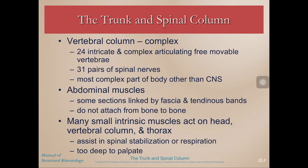Your vertebral column is made up of 24 intricate and complex articulating freely movable vertebrae. We have 31 pairs of spinal nerves as well, but we don't need to know those for this course — we'll be focused on the bony and muscular structures. This is also where we have the abdominal muscles, so some of these muscles are linked by fascia and tendinous bands instead of by bone. We have many small intrinsic muscles as well as larger ones that act on the head, vertebral column, and thorax, and these assist in spinal stabilization and respiration. Some of them are too deep to palpate.